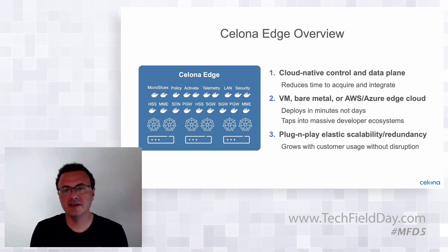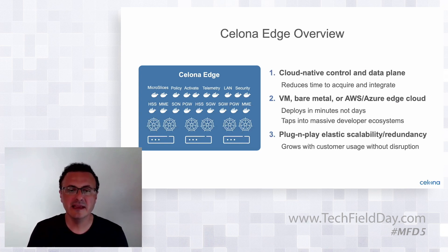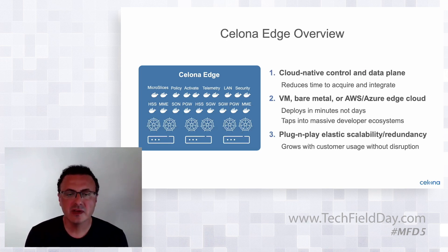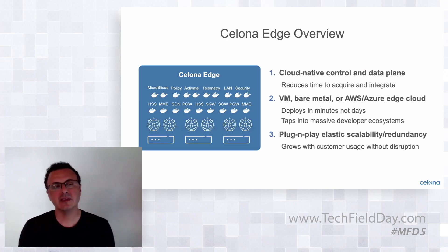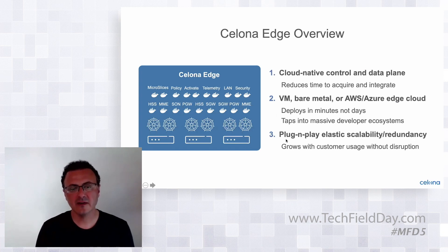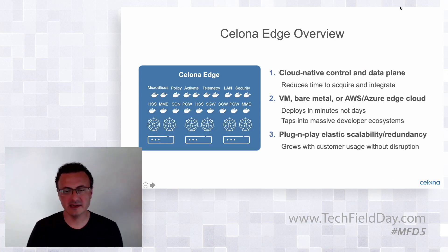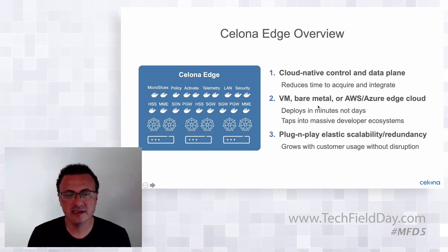This is where we separate not only the control and user plane, but we can also create an instance of the core per device group or application as microslices — that will hopefully become more obvious. Celona Edge also enables full integration with the existing enterprise network. For example, device groups and application flows on the cellular wireless are translated to existing LAN, VLAN, VXLAN, or ACL systems.